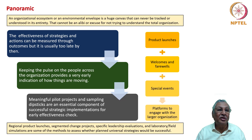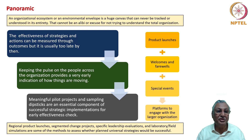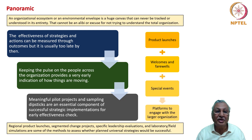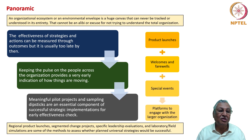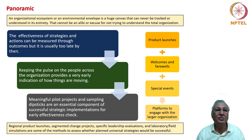The panoramic view: an organizational ecosystem or environmental envelope is a huge canvas that can never be tracked or understood in its entirety — but that cannot be an alibi for not trying to understand the total organization. Product launches happen all the time; there could be welcomes and farewells, special events, platforms to engage with the larger organization. Keeping the pulse on people across the organization through a deliberate mechanism provides early indication of how things are moving. Meaningful pilot projects and sampling dipsticks are essential components of successful strategic implementations for early effectiveness checks. Regional product launches, segmented change projects, specific leadership evaluations, and laboratory field simulations are some methods to assess whether planned universal strategies would be successful.